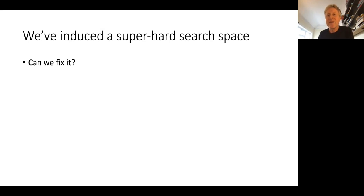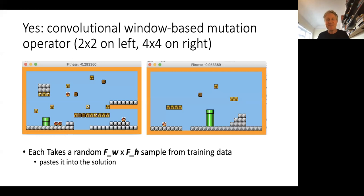We just ask ourselves, can we fix it? Yeah, we can. What we do now is use a convolutional window based mutation, where we're going to sample from the training set and put these chunks in random locations in the generated images. This completely fixes it and works pretty well now.